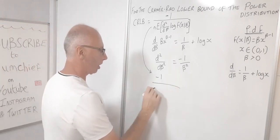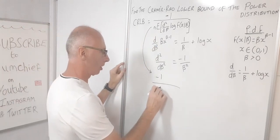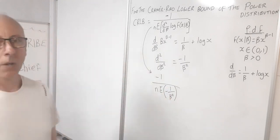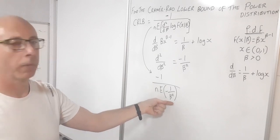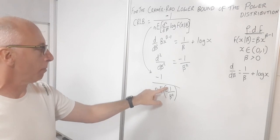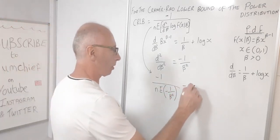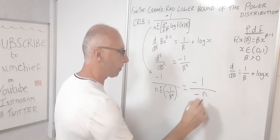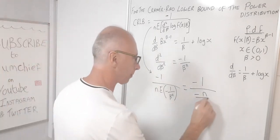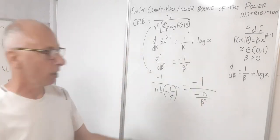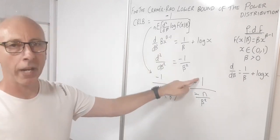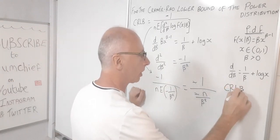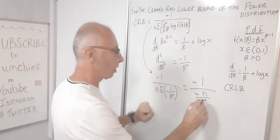We now have -1/n times the expectation of -1/β². Since this has no x term, the expectation is just -1/β². So we get -1/n times -1/β², which gives us β²/n. That's our Cramér-Rao lower bound.